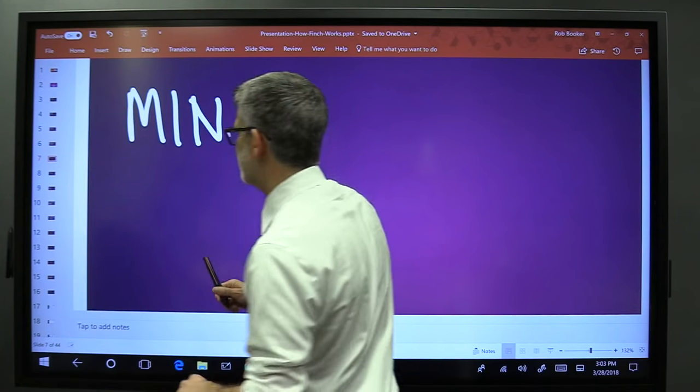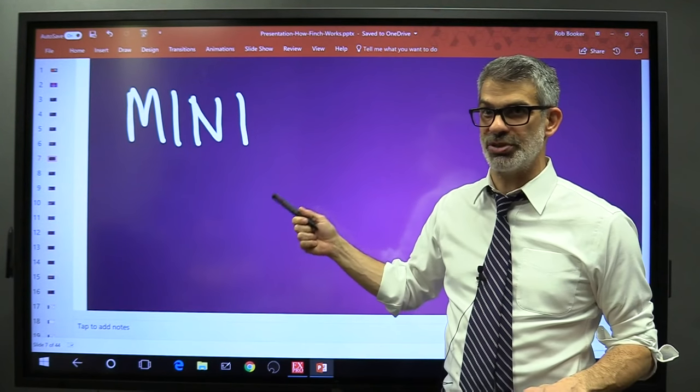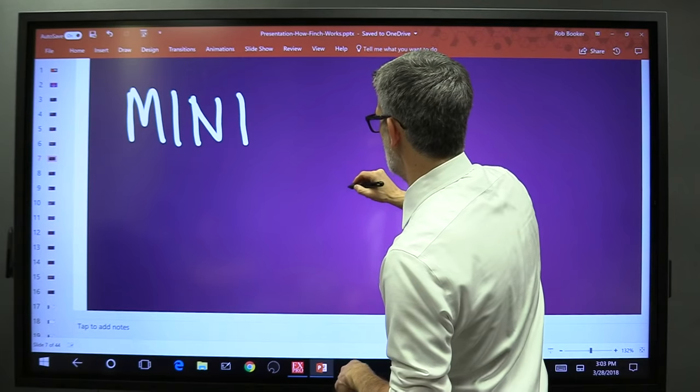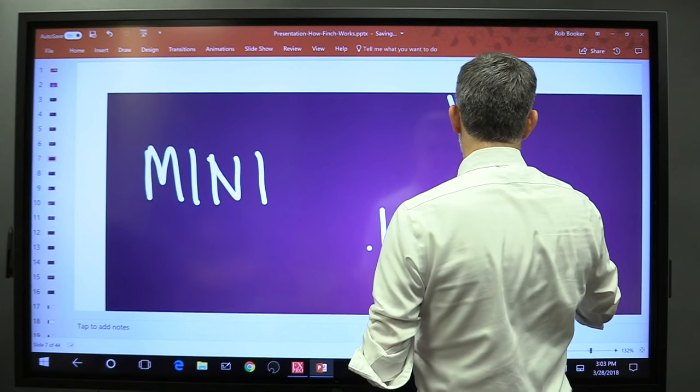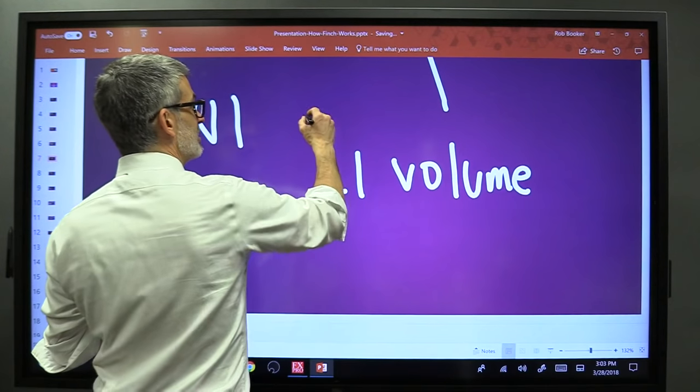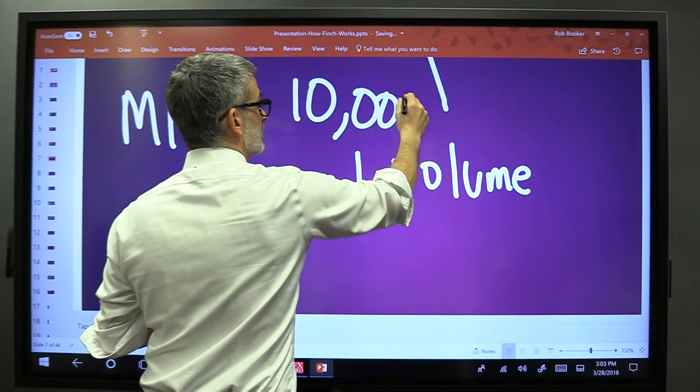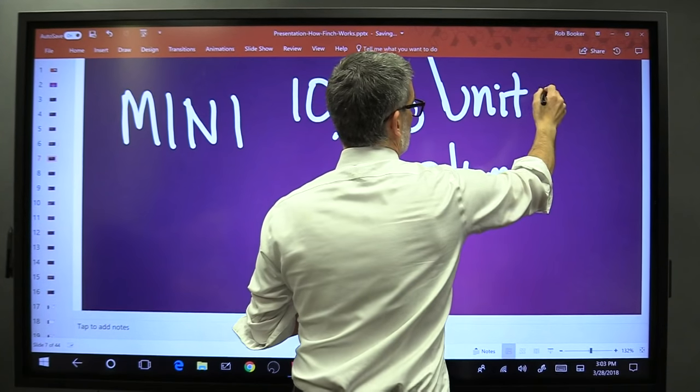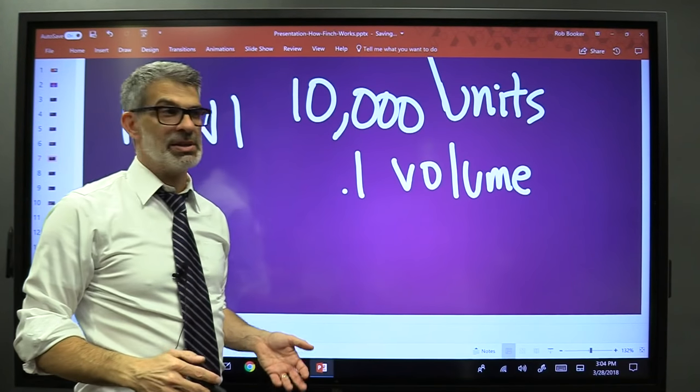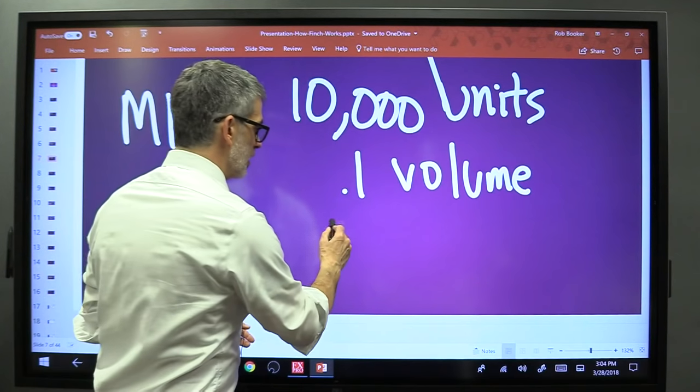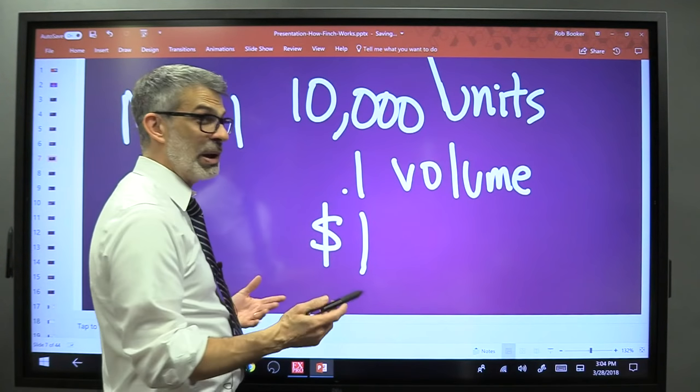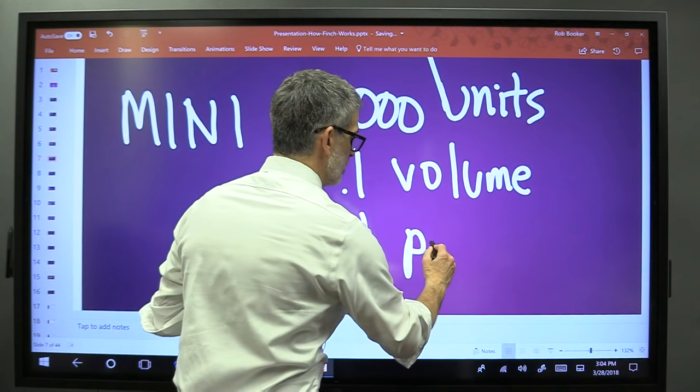The next trade size you can trade is a mini, and it's 10 times larger than a micro. Point one is the volume. You would be trading 10,000 units of currency instead of 1,000. If every micro lot was worth 10 cents, every mini lot is worth approximately one dollar. One dollar per pip, depending on where your account was initiated.